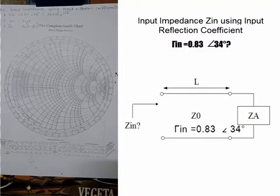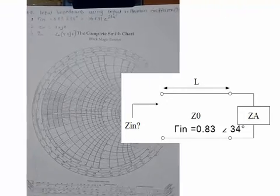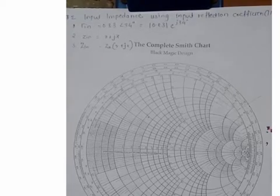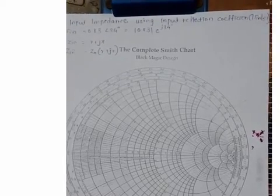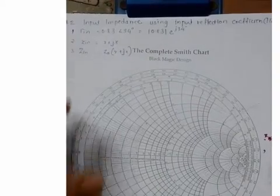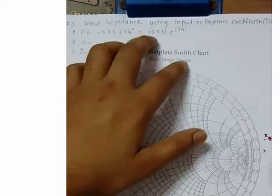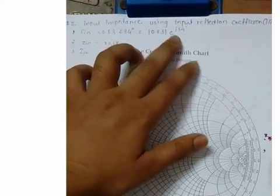Hi YouTube, welcome to Smicha Tutorial. I'm going to show you how to find input impedance using input reflection coefficient where gamma_in is less than 1. Gamma_in equals 0.83 angle 34, which you can represent as 0.83 magnitude with angle e^(j34).